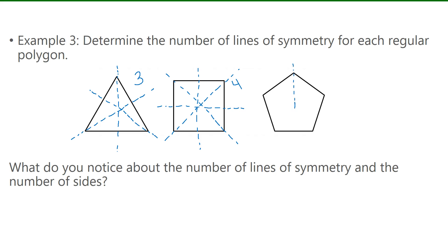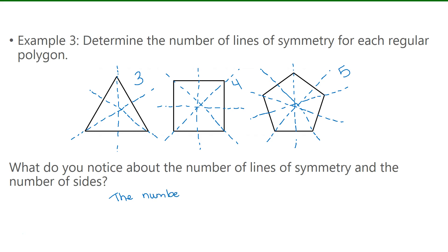For the pentagon, drawing a line straight down the middle and folding gives a line of symmetry, and folding along additional lines also coincides with itself — giving five lines of symmetry. We notice that the triangle had three lines of symmetry, the square had four, and the pentagon has five. For any regular polygon, the number of lines of symmetry is equal to the number of sides.